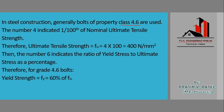In steel construction, bolts of property class 4.6 are most commonly used. The first digit '4' indicates one-hundredth of the nominal ultimate tensile strength. So we multiply 4 × 100 to get the tensile strength. The ultimate tensile strength fu = 4 × 100 = 400 N/mm².